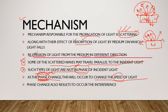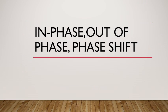نتیجہ: speed of light ہمیشہ تب change ہوتی ہے جب phase change ہوتا ہے۔ اور جب بھی phase change ہوتا ہے تو ہمارے پاس ایک اور phenomenon ہوتا ہے جسے interference کہتے ہیں — یہ most important phenomenon ہے۔ Interference discuss کرنے کے لیے ہمیں in phase، out of phase، اور phase shift کو سمجھنا ہوگا۔